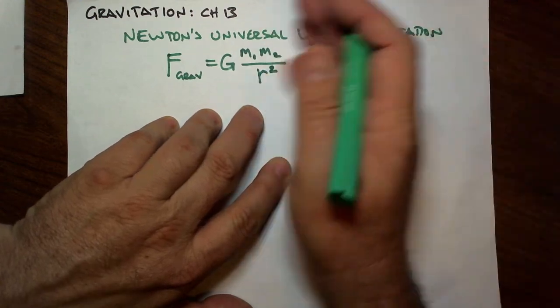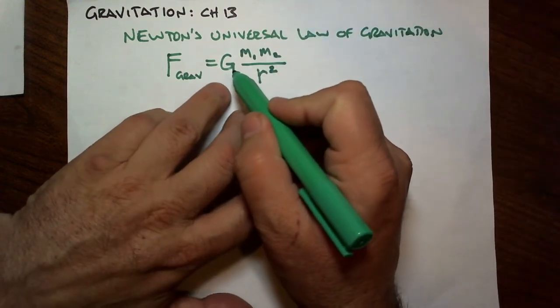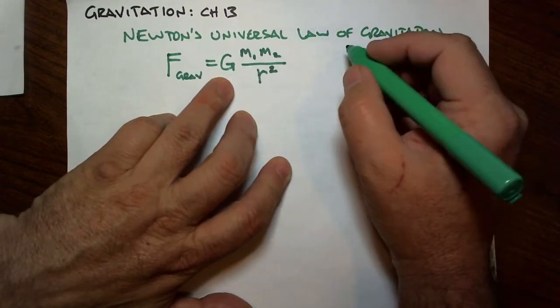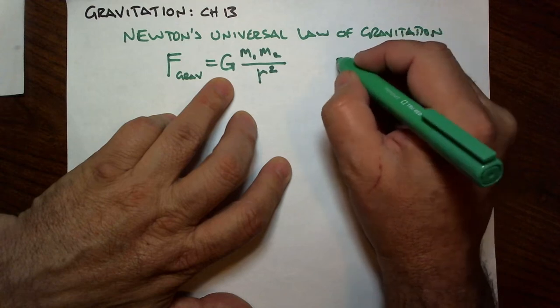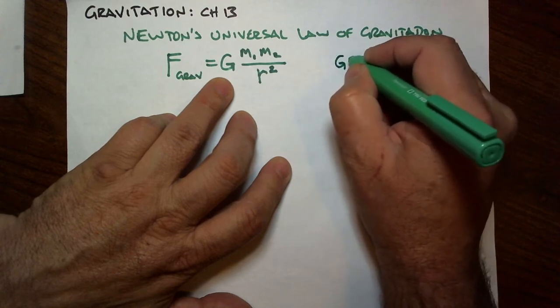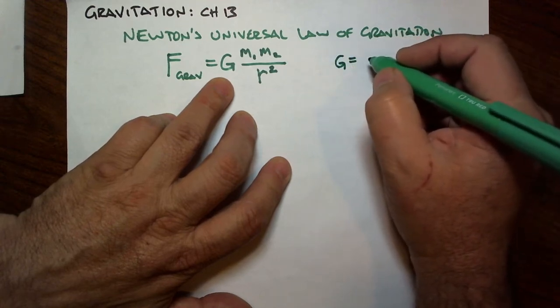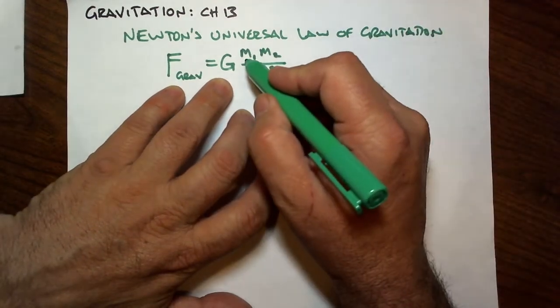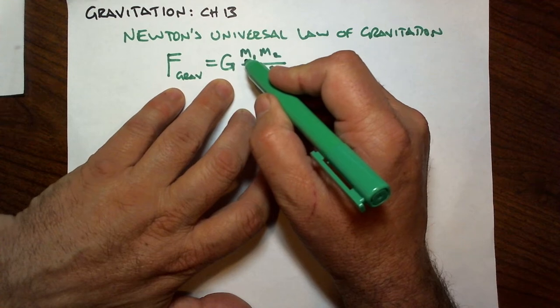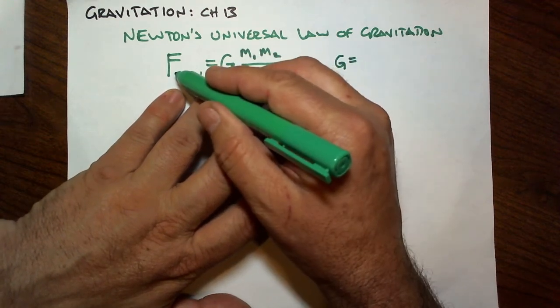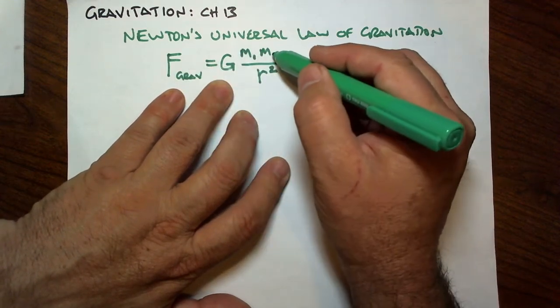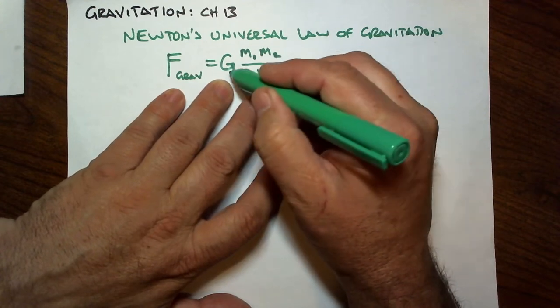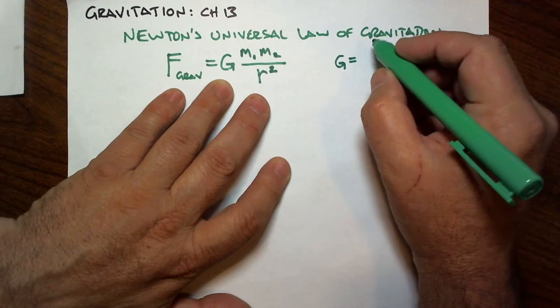Isaac Newton died before anyone actually measured what this constant G was, because gravitational forces are very small. Eventually a gentleman by the name of Henry Cavendish performed an experiment to find this number. This experiment was referred to as weighing the earth because we didn't know the mass of the earth. We knew how big it was, but we didn't know the mass. We knew the force of the earth on terrestrial objects of a given mass and how big the earth is. So if you could find this constant, you could figure out what the mass of the earth was.